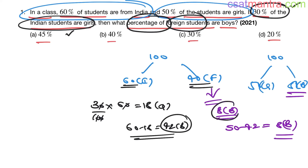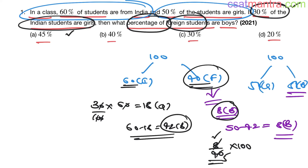The question asks: what percent of foreign students are boys? Total foreign students = 40. Boys among foreigners = 8. So 8 is what percent of 40? (8/40) × 100 = 20%. Our answer is D — 20%.